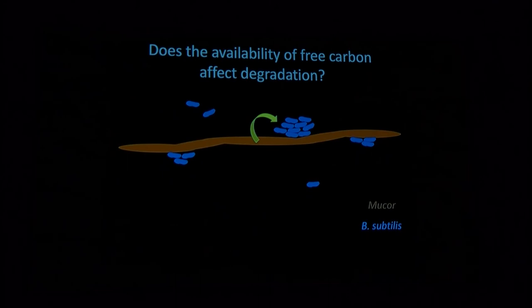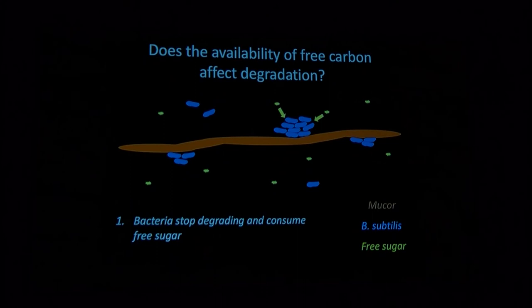So if we put this all together, we take our C13 labeled mucor, we add some Bacillus subtilis and let it form its aggregates. And we know that the subtilis is going to decompose the mucor and take up its carbon. We can ask a fundamental question: how does the availability of free carbon affect decomposition? So if we add a kind of cheap available food source that's easy to live off of, what's going to happen? Is it actually going to live off of the mucor or is it going to take up just the free sugar?